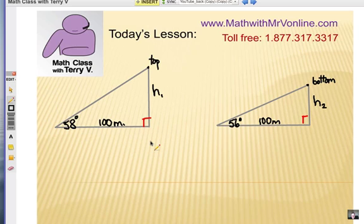So what I've done is separate these triangles out and we have two right triangles. The bottom leg here is 100 meters on both. Here it's 58 degrees to the top of the tower and here is 56 to the bottom of the tower. We're going to find H1 and H2 and use some right triangle trig.